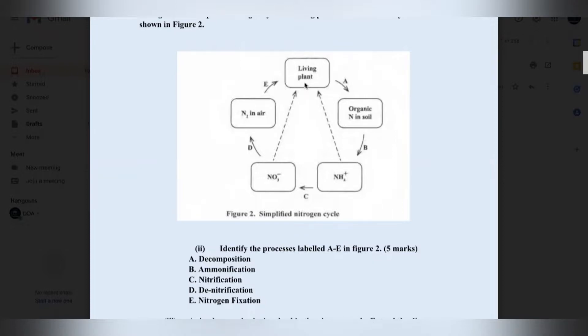Therefore, living plants going to organic nitrogen in the soil is definitely decomposition. Organic nitrogen going to ammonia here is ammonification. Ammonia going to nitrates is nitrification. Nitrates going to nitrogen in the air is denitrification. And nitrogen going to the living plants is nitrogen fixation.